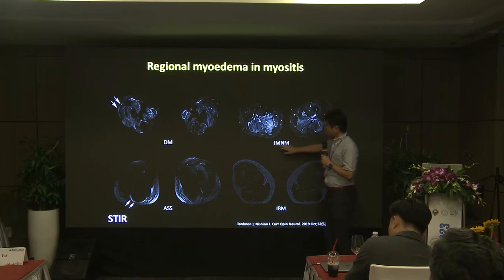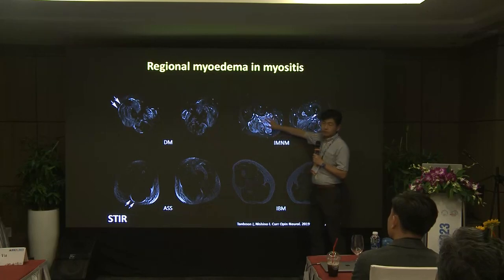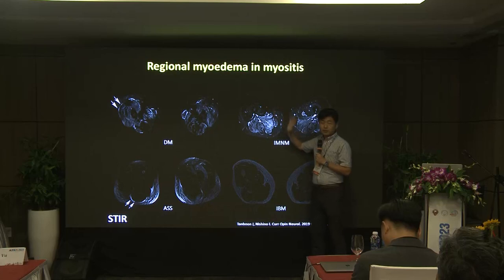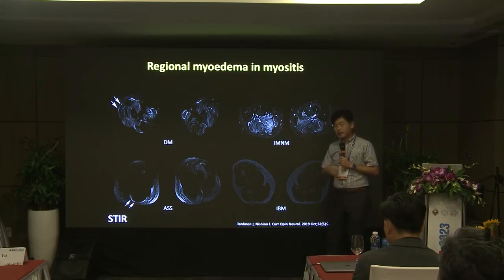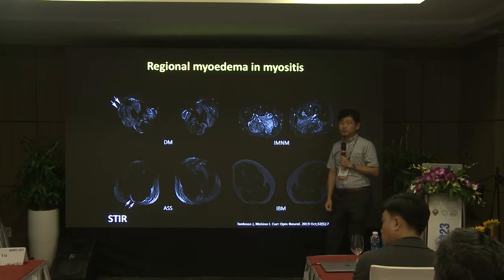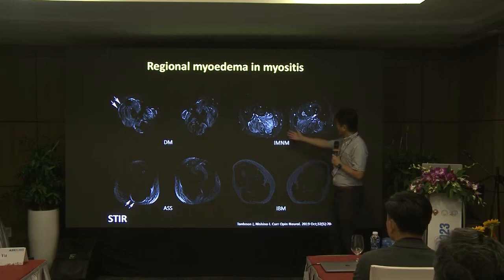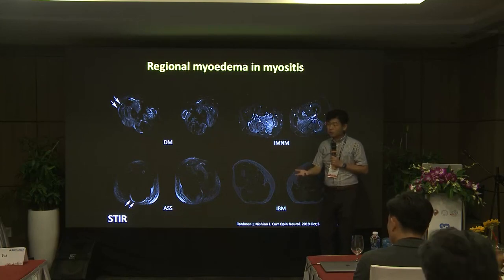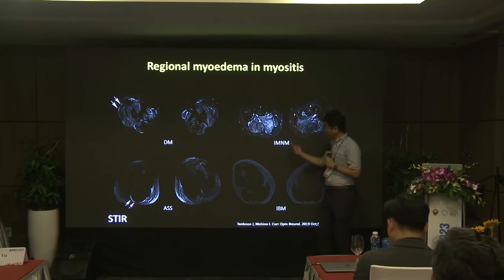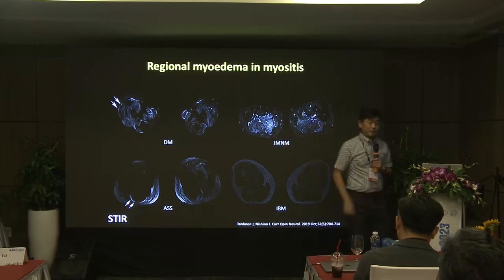For myositis, you need MRI because you want to see edema — and edema cannot be detected by muscle CT. For example, in immune-mediated necrotizing myopathy, these posterior muscles show myoedema but not the quadriceps. In many hospitals previously, people routinely biopsied from quadriceps — in this case, if you do that, the result will likely be completely normal muscle. So you have to choose the right muscle using MRI guidance. Muscle MRI is very useful.